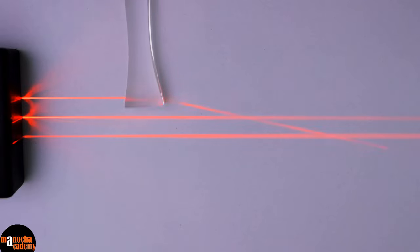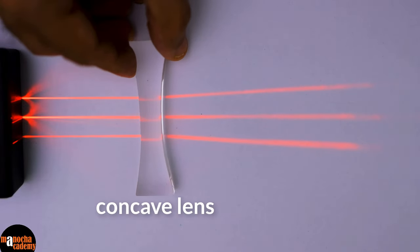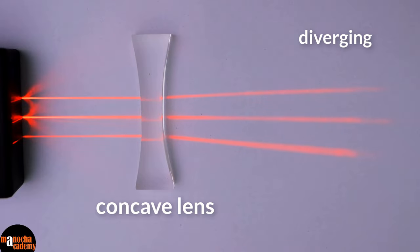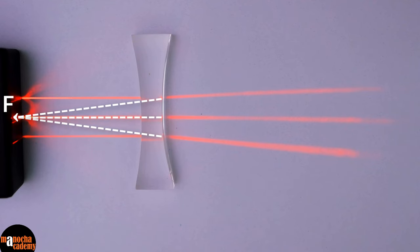Now let's try the concave lens. As you can see here, it is spreading, diverging the parallel beam of light. The diverging rays don't meet. You need to trace them back and then they will meet at a point. So, the focus of the concave lens is on the left hand side and it is virtual.